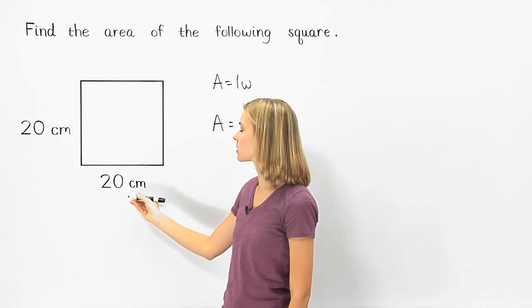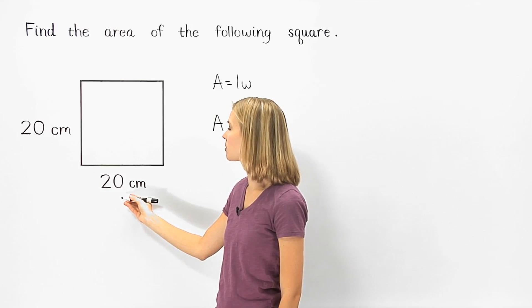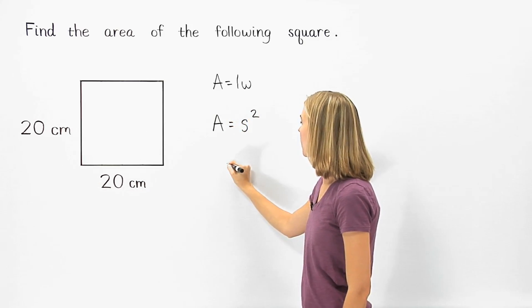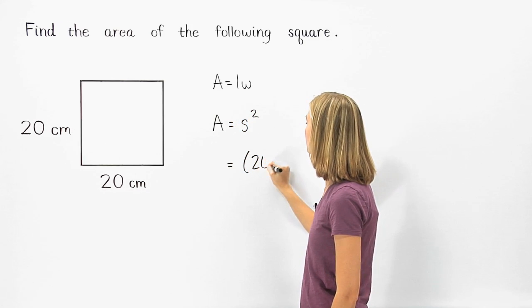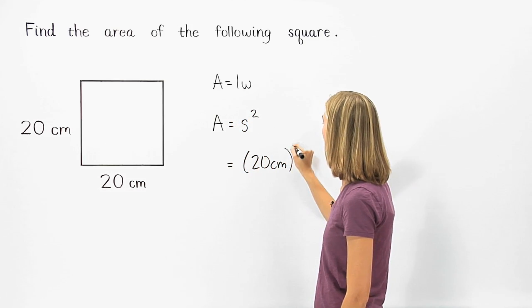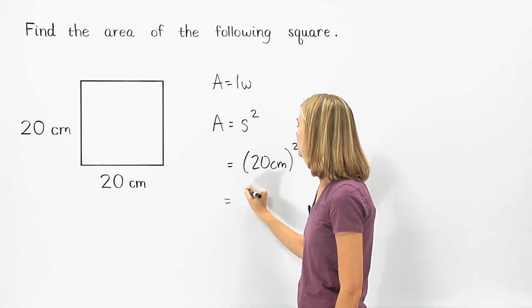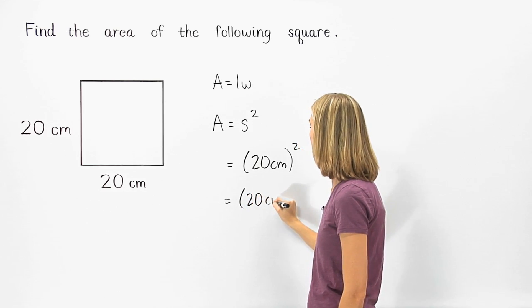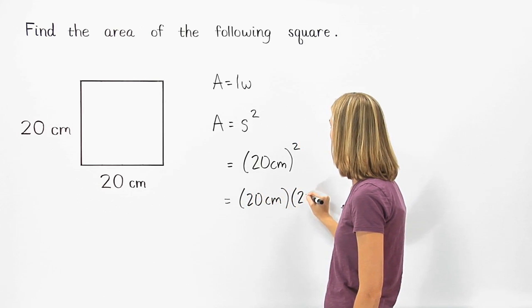And since the sides of the given square each have a length of twenty centimeters, the area of the square is equal to twenty centimeters squared, or twenty centimeters times twenty centimeters.